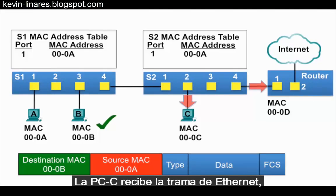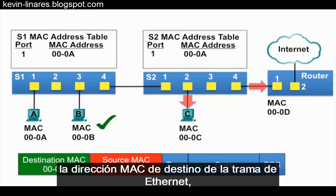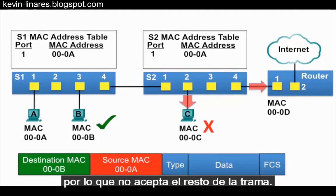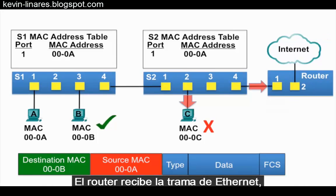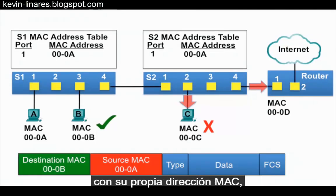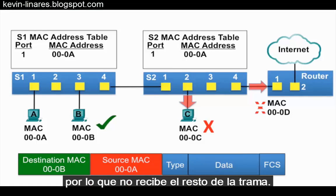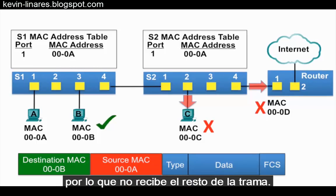PCC receives the Ethernet frame and its MAC address does not match the destination MAC address of the Ethernet frame, so it does not accept the rest of the frame. The router receives the Ethernet frame, examines the destination MAC address against its own MAC address, and notices it is not a match, so it does not receive the rest of the frame.